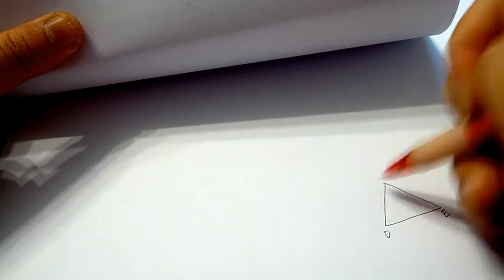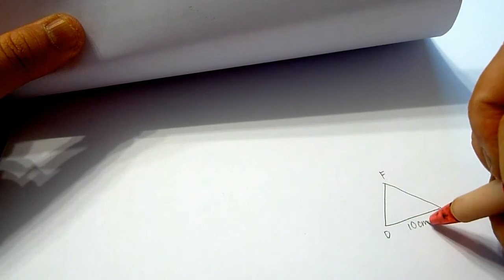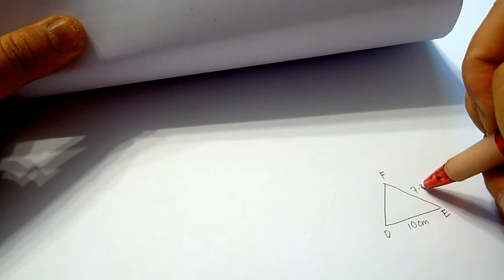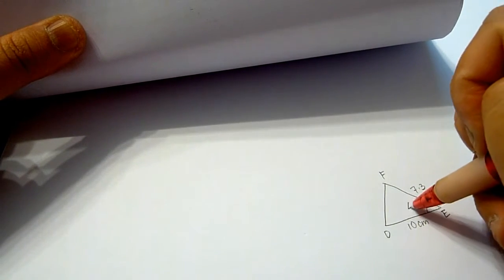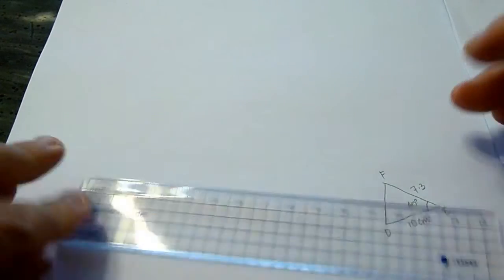First, we will sketch the triangle on the paper and label it DEF. Then, put down the measurement. Here, this is how it will look like.